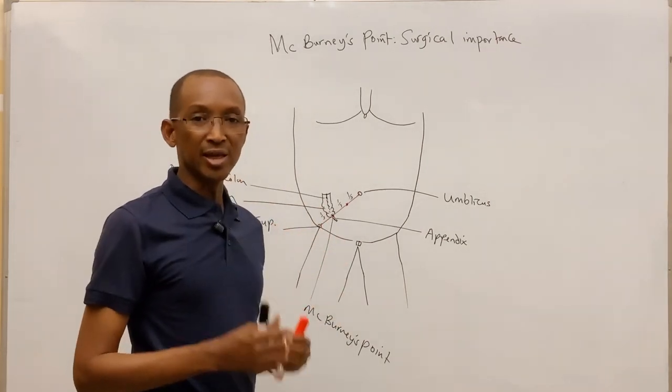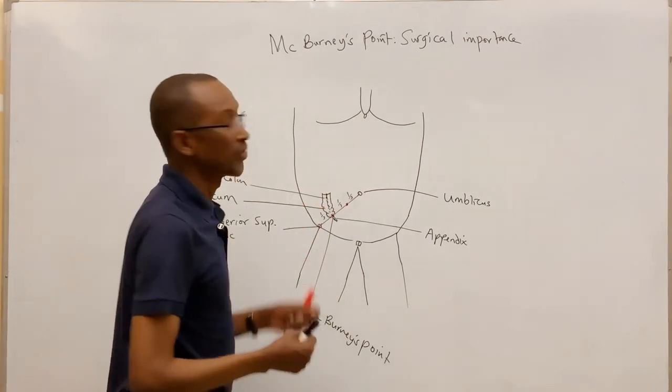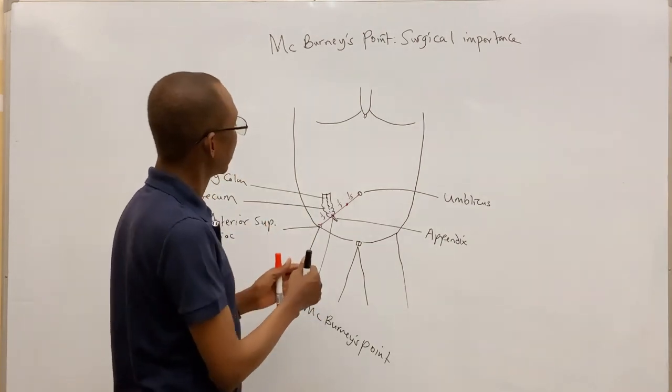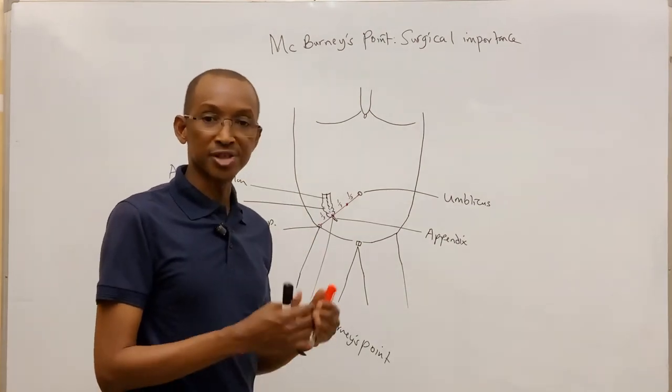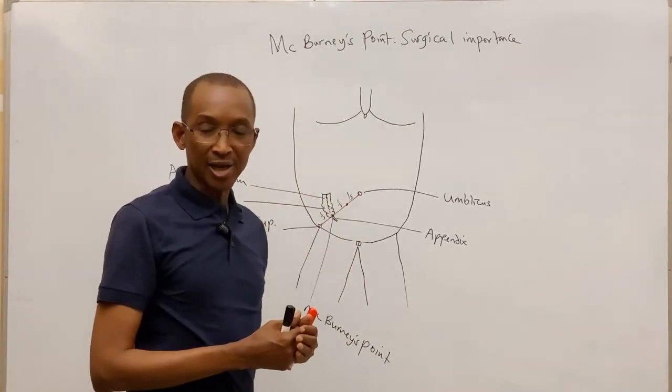This appendix is a blind tube, a diverticulum, from the cecum. We know that large intestine begins from the cecum. So the cecum continues upward as an ascending colon.